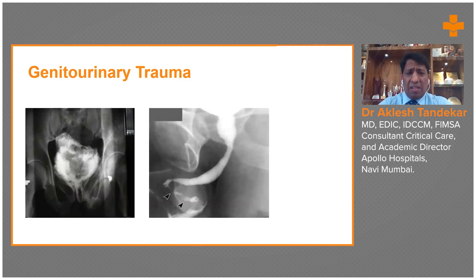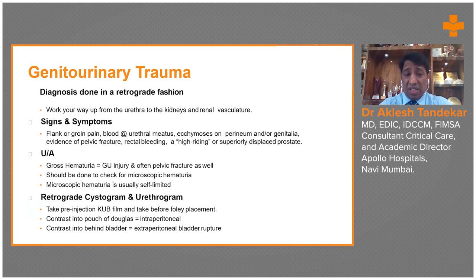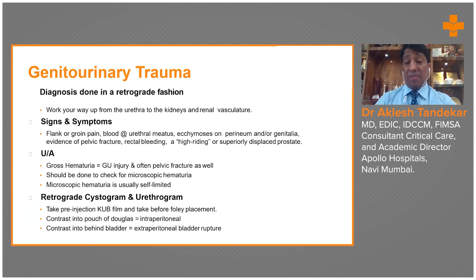Genitourinary trauma is associated with pelvic trauma. Cystourethrography is a good diagnostic tool to identify pelvic trauma and associated injuries. Signs and symptoms include pain in the flank area, blood in the urethral meatus, ecchymosis on the perineum or genital area, evidence of pelvic fracture, rectal bleeding, or a high-riding prostate. If the patient has a pelvic fracture, stabilization of the pelvis is very important — initially manual, then with pelvic binders.